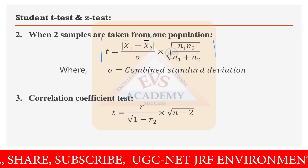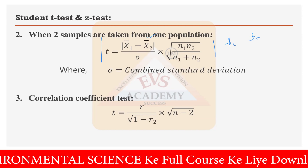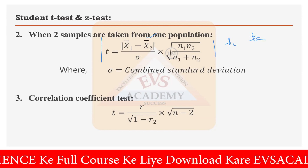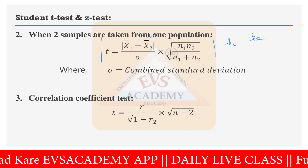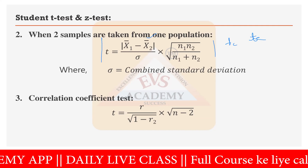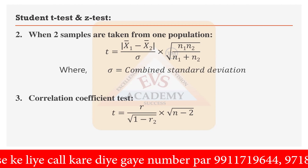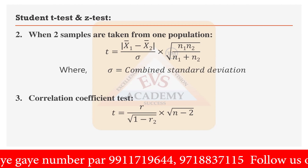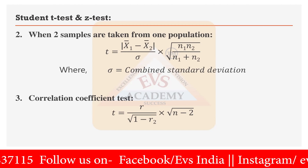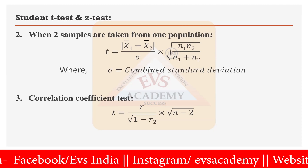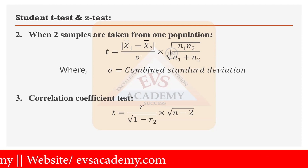Once you get the calculated t value, you compare it with the table value — the critical value, also called the t-alpha or t-z value. That comparison tells you whether your null hypothesis is correct or the alternative hypothesis is correct. Remember this formula: till date in UGC examinations they haven't asked a question from this two-population mean comparison because the solution is very lengthy — you first calculate the combined standard deviation and then the t value — but they can ask, so remember the formula.